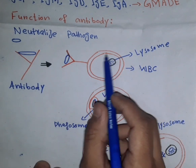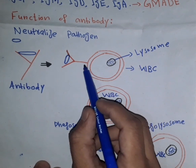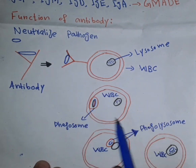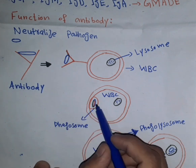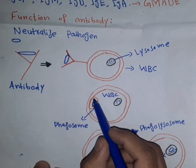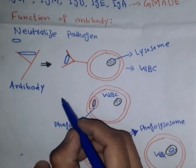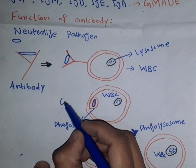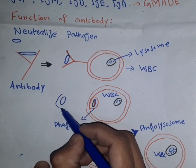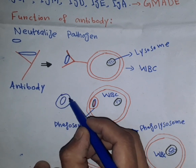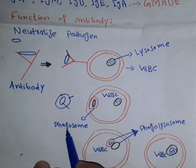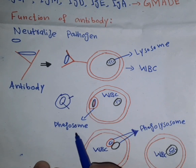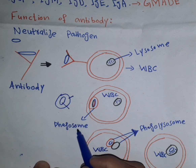In this process, the white blood cell is attached by the cell membrane. The pathogen enters the white blood cells through the cytoplasm and membrane. The membrane and the pathogen together form a structure called the phagosome.